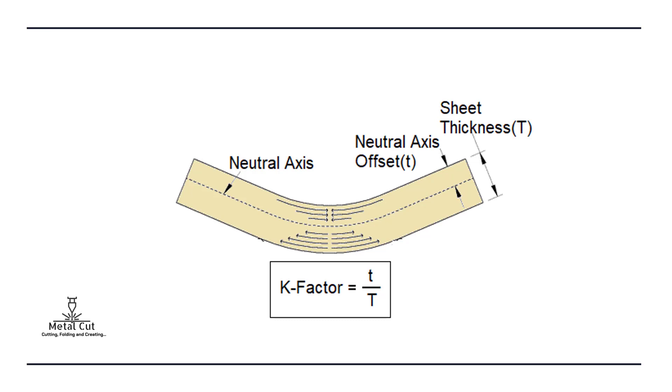Here you have compression and here you have tension. So this neutral axis distance from the inside to the neutral axis is called T, and the ratio of T by thickness is known as K factor.